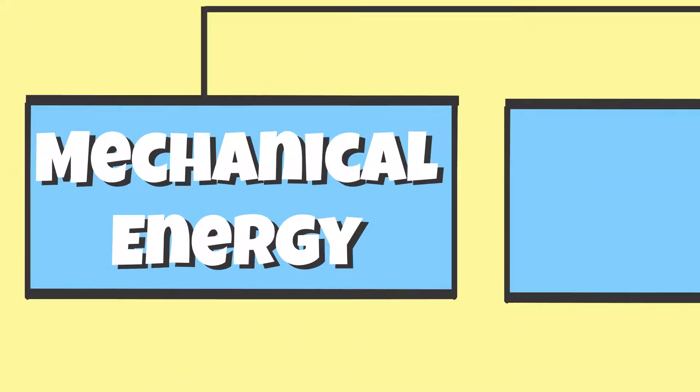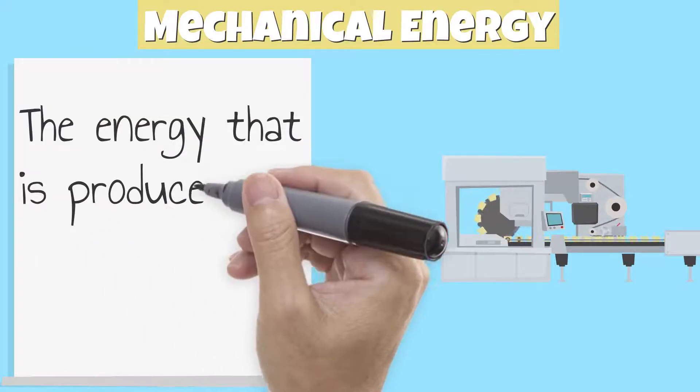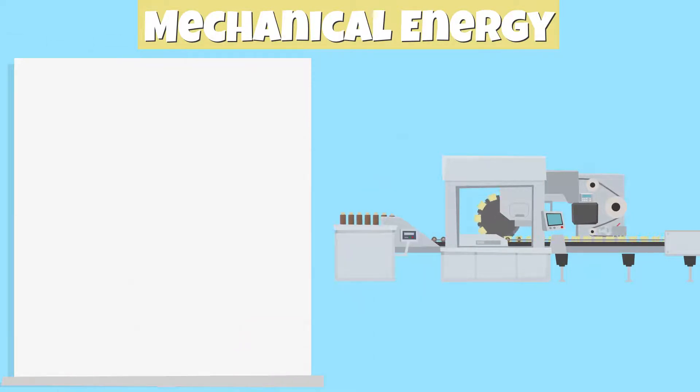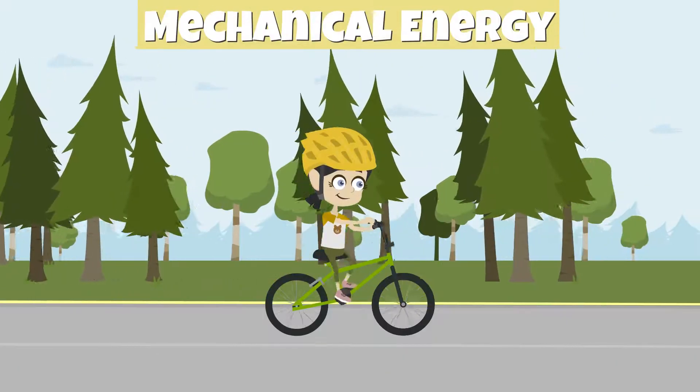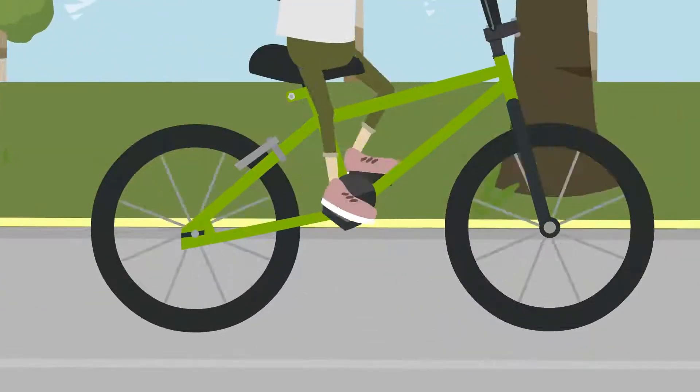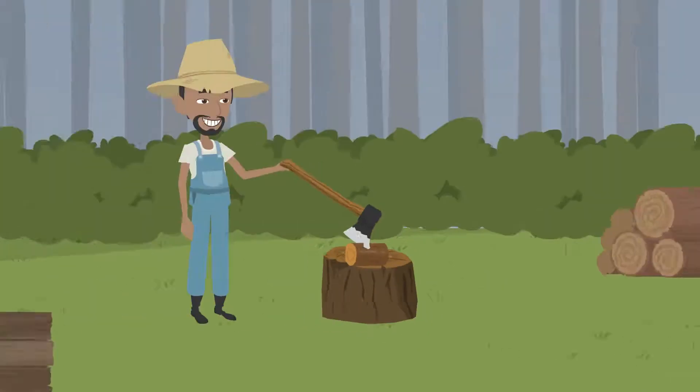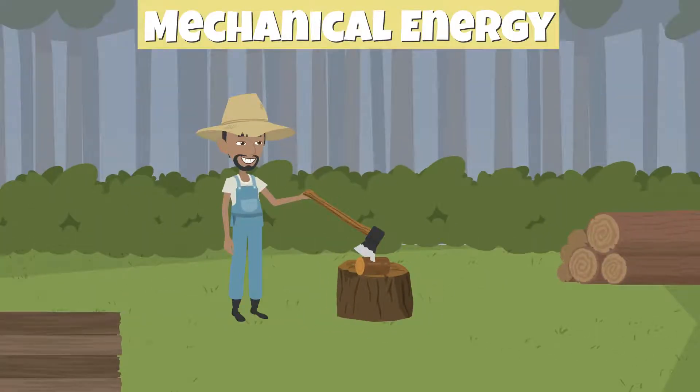Let's begin by exploring mechanical energy. Mechanical energy is energy that is produced by a machine or a moving part. Some examples of mechanical energy used include getting on a bicycle and pushing on the pedals, a rotating fan, and an axe that is used to cut wood. These all have moving parts.